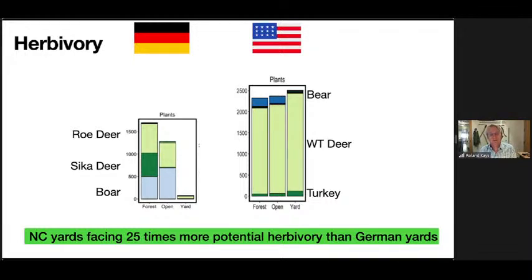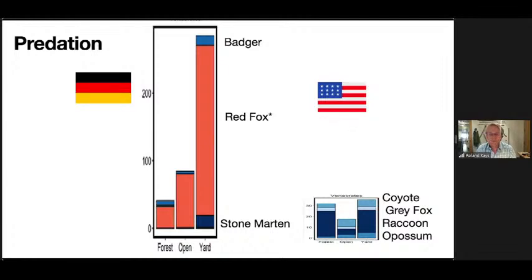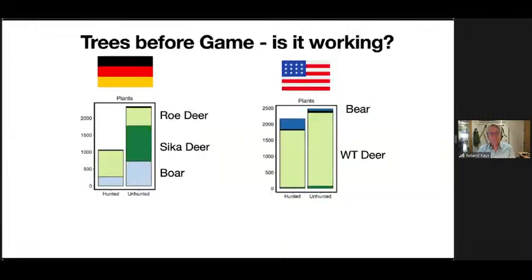On the other hand, German yards have a lot more predation pressure because there are so many red foxes — if a mouse shows up in a German backyard, it's likely to get eaten by a red fox, stone marten, or badger. In the US, predation rates are lower overall — a mix of possums, raccoons, gray fox, and coyotes — raccoons aren't super predators but they'll eat a frog or mouse. At the forest level, predation rates are roughly similar between the two countries.